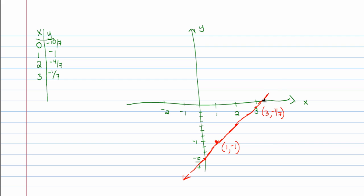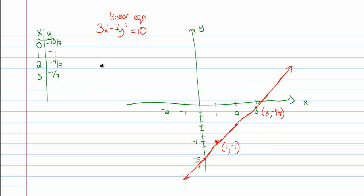This is a line because the equation originally had the form ax plus by equals c. In fact, the initial equation was 3x minus 7y is equal to 10 — that's a linear equation. Since the powers on each of the variables are just a single 1, I know that this is going to graph out to be a line. Now, let's do one more example before I end this part, then you can start the video for the next part.